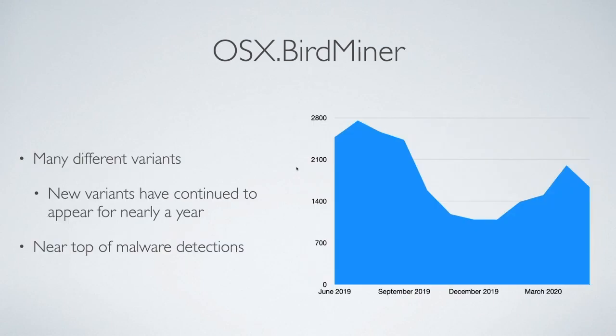There have been many different variants of BirdMiner since we first detected it in June of last year. As you can see from the graph, we continue to see it — the rates have gone up and down, but there hasn't been a single month with zero detections since June. We're still seeing a lot of these and new variants appearing, and it's really near the top of our malware detections.